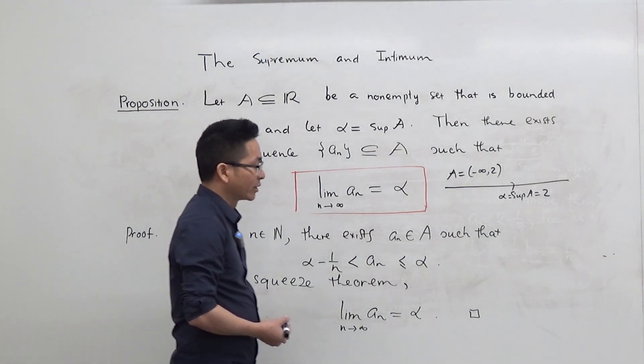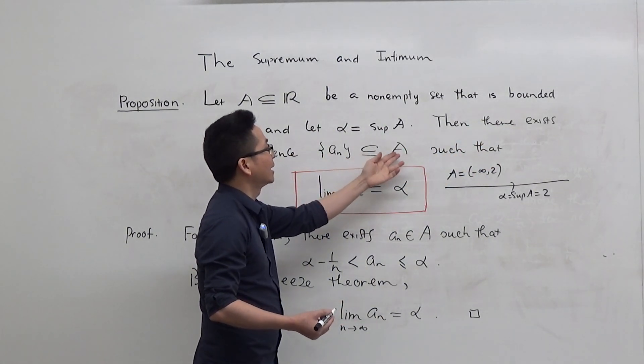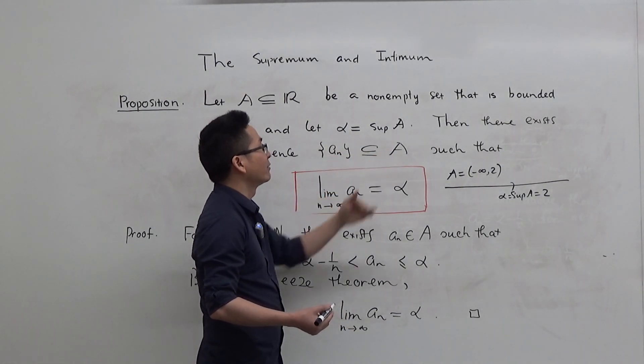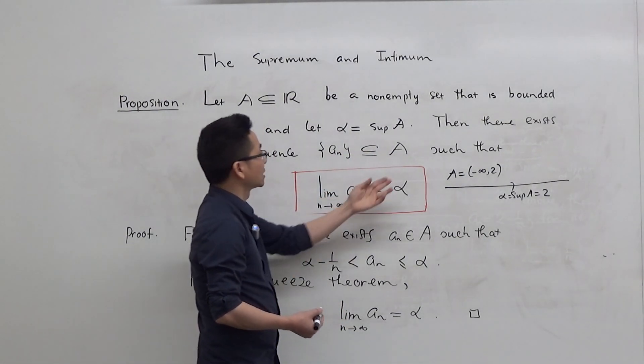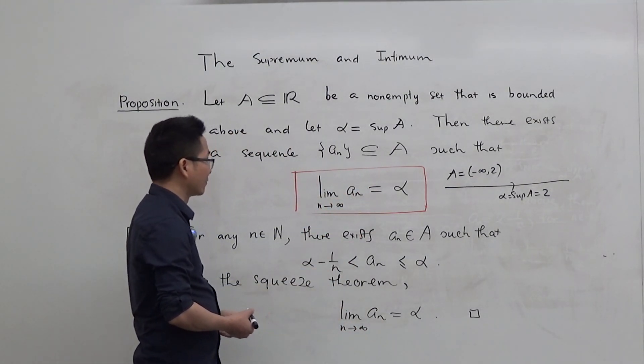The conclusion of the theorem says that then there is a sequence A_n in A, that means A_n belongs to A for every n, such that the limit of A_n as n approaches infinity is equal to alpha.